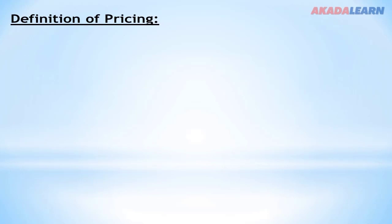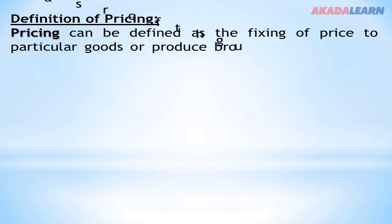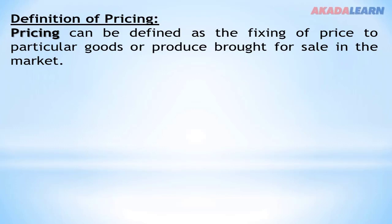What is pricing? Pricing can be defined as the fixing of a price to particular goods or produce brought for sale in the market. The act of fixing a price is known as pricing. Pricing can also be seen as the act of bargaining between the buyer and the seller on a certain price of a produce.